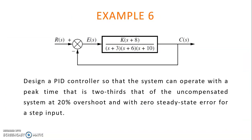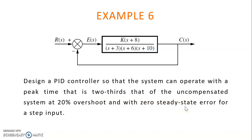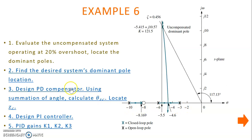This is an example for PID controller design. Based on the given block diagram, we need to design a PID controller so that the system operates with a peak time that is two-thirds of that of the uncompensated system, at 20% overshoot, and with zero steady state error for a step input. First, evaluate the uncompensated system operating at 20% overshoot.